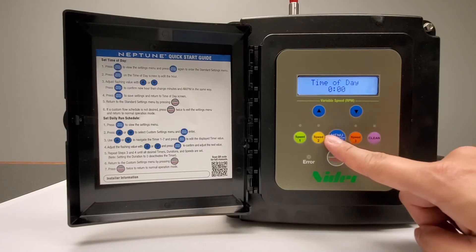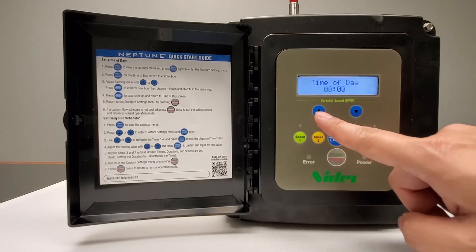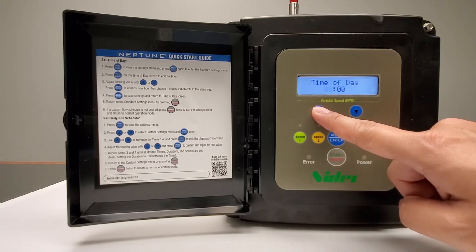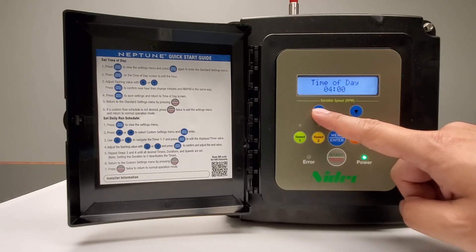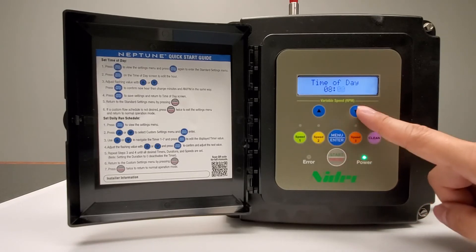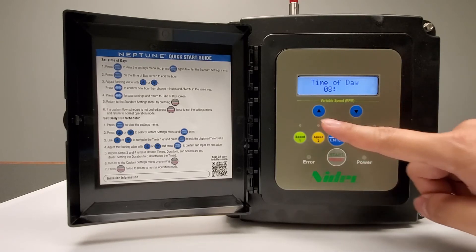Press the menu/enter button again to begin setting the time. We will first begin by setting the hours by using the up and down arrow keys. When you have set the correct hours for the Neptune motor, press the menu/enter button again to change the minutes.